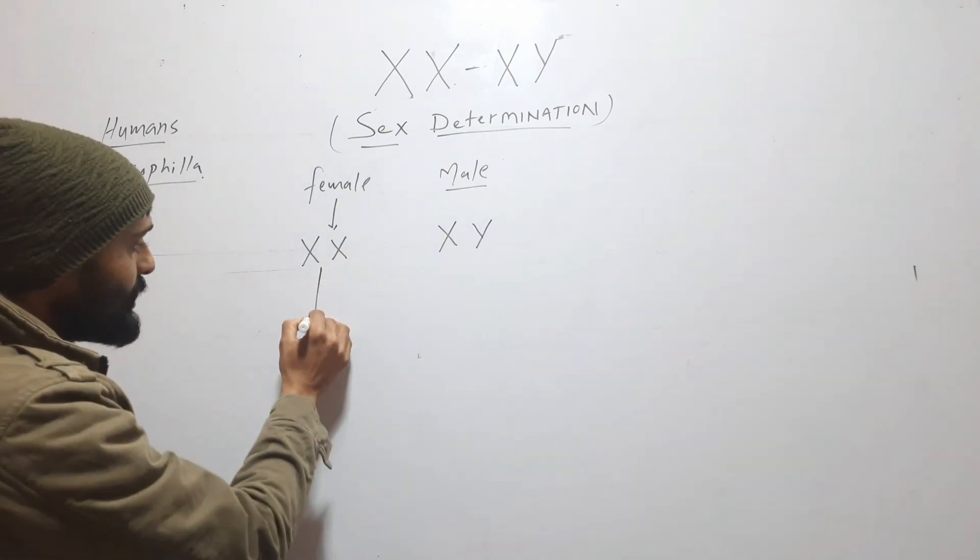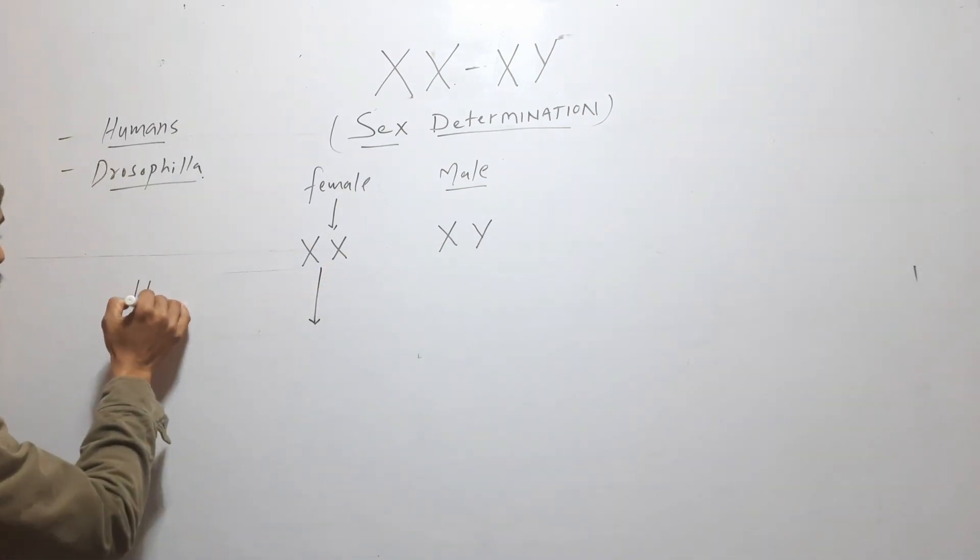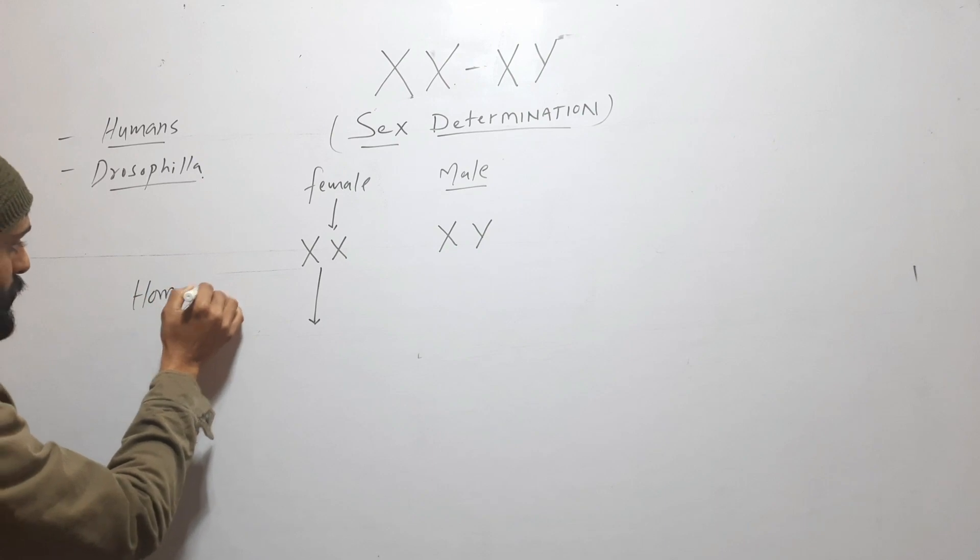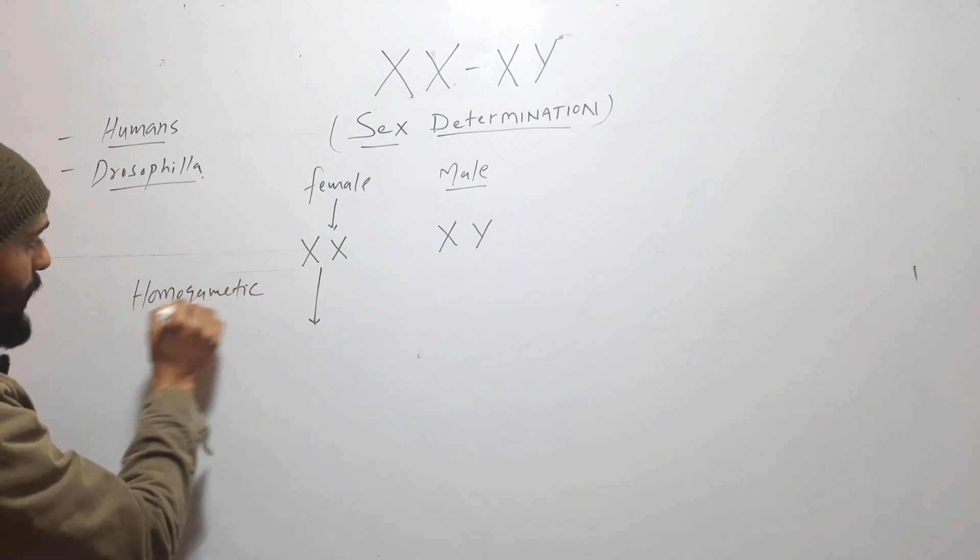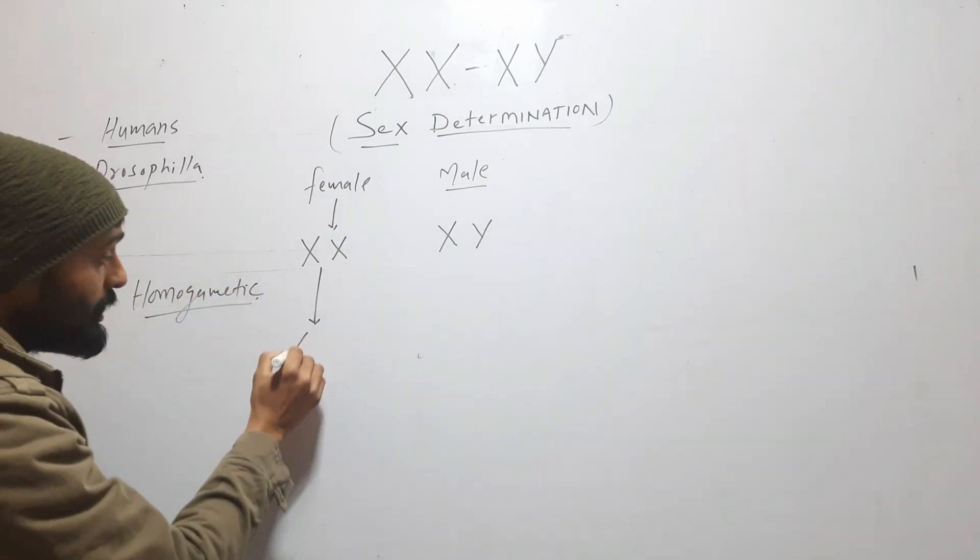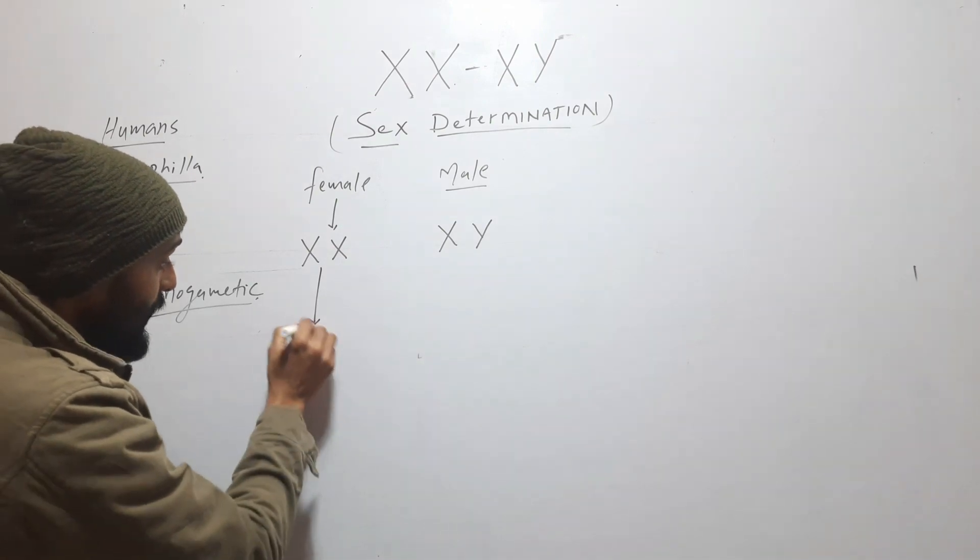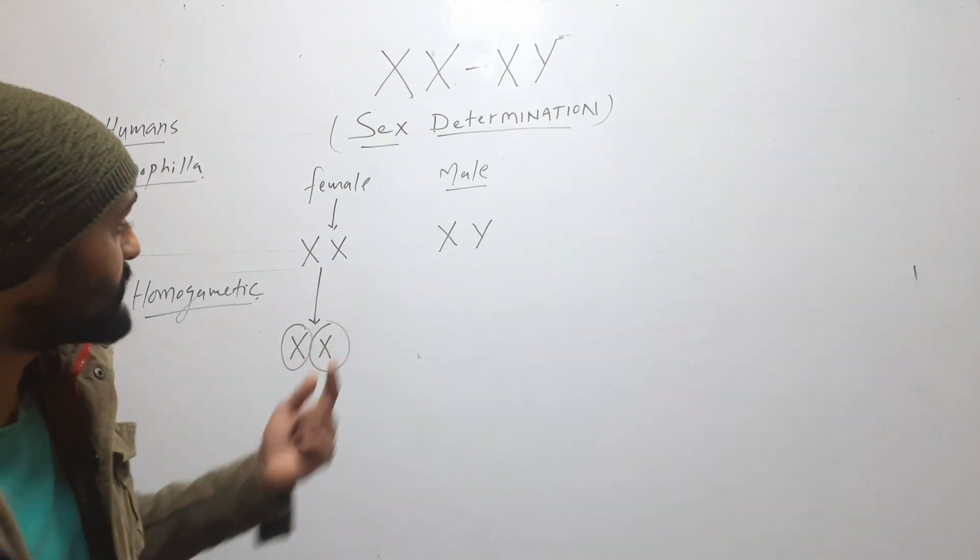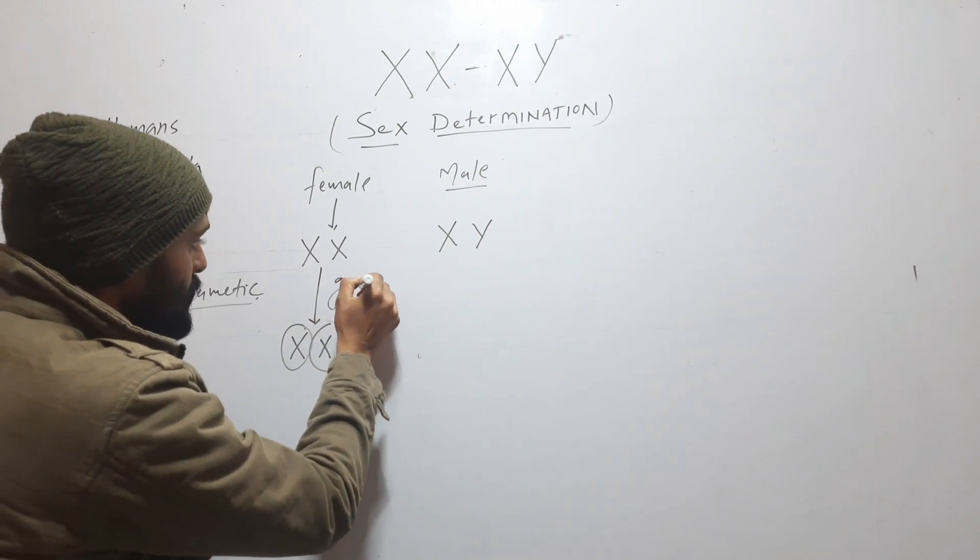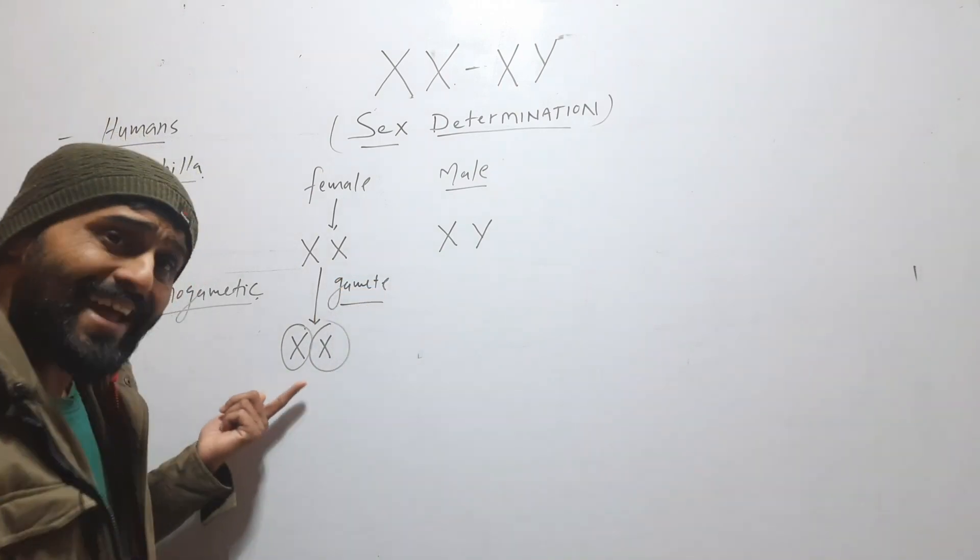This female will be called homogametic because it will always produce X chromosomes. So when there is gamete formation, it will always produce X.